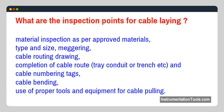What are the inspection points for cable laying? Material inspection as per approved materials — type and size — meggering, cable routing drawing, completion of cable route, tray, conduit, or trench, cable numbering tags, cable bending, and use of proper tools and equipment for cable pulling.